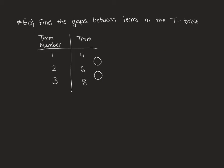Question 6a starts by asking you to find the gaps between terms in a t-table. They'll give you a chart and you're finding the gaps between the two numbers in the terms, not in the term numbers. To get from 4 to 6 you add 2 and to get from 6 to 8 you add 2. Question B is going to ask you which sequences are increasing. To find which ones are increasing, the numbers all need to go from least to greatest. This example that we have here would be an increasing sequence.